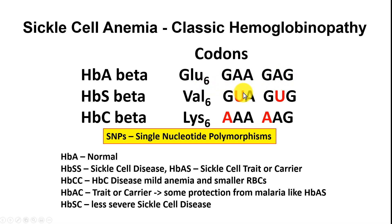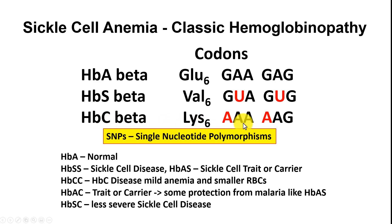These are the two codons that code for HBA. HBS has a valine, and these are the two codons that code for it. HBC beta has a lysine. HBC is a similar disease to sickle cell anemia. Lysine is at position 6, and it has three codons. These are single nucleotide polymorphisms — SNPs — and these two variants cause disease in different ways.